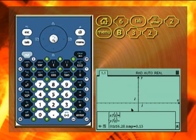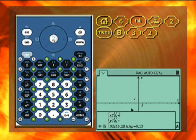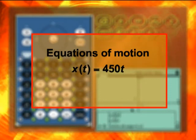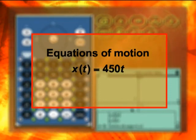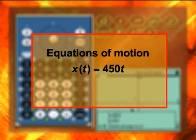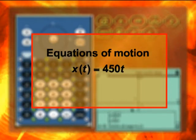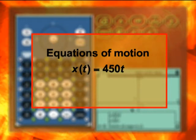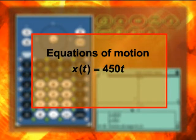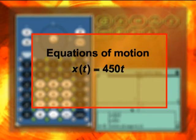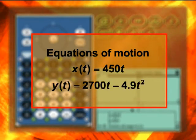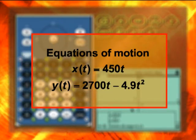The rocket is moving horizontally at a speed of 450 meters per second. Its equation of motion is x(t) equals 450t. Vertically, the rocket starts with an initial speed of 2700 meters per second, but it slows down with a constant acceleration. The equation of motion in the vertical direction is y(t) equals 2700t minus 4.9t squared.